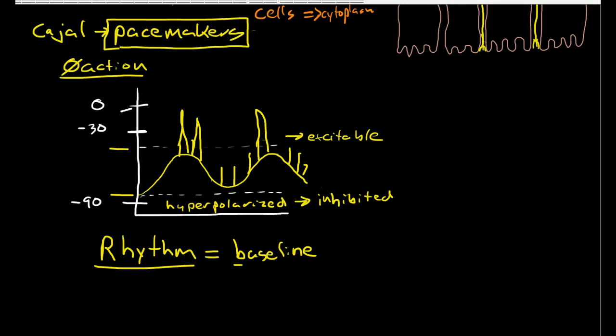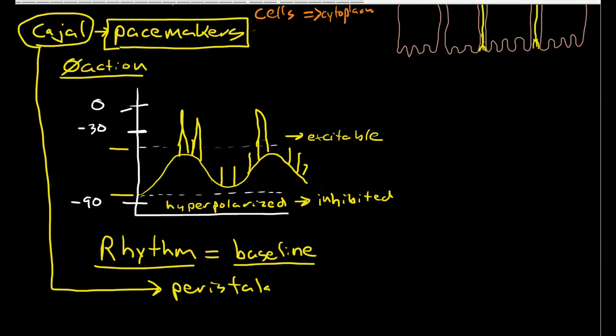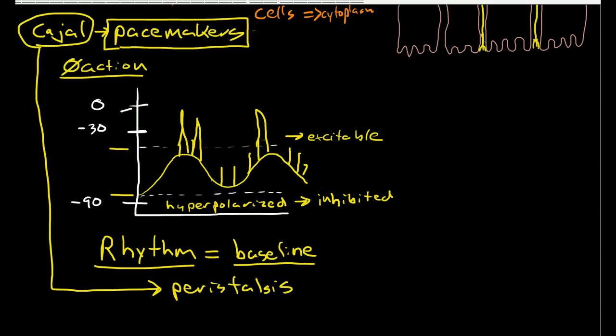This is really important. We know that people, there are some diseases that kill Cajal cells, and when you have no functional Cajal cells you lose the ability to have functional peristalsis. This is due to the loss of rhythm, the baseline rhythm that is within our gut.